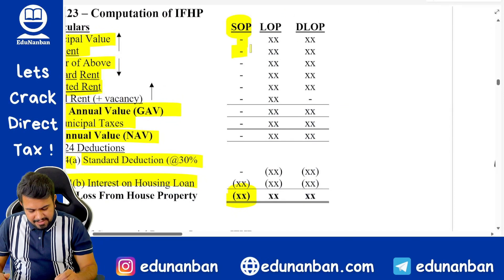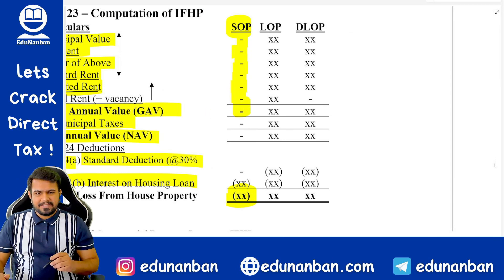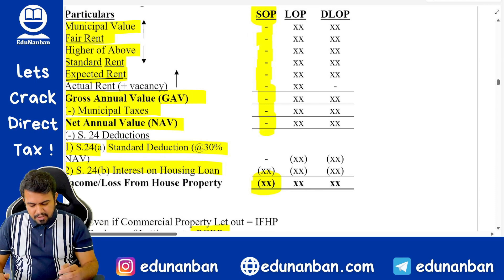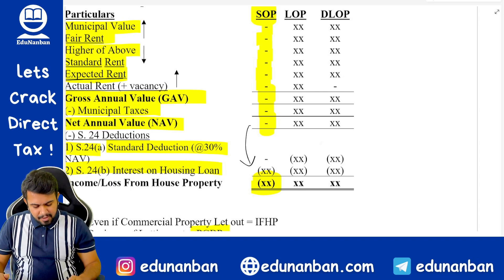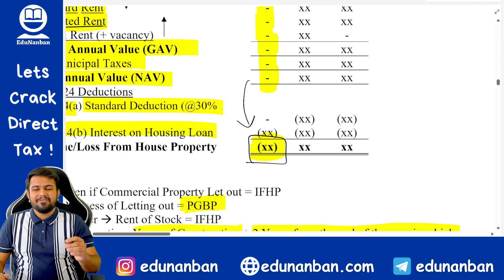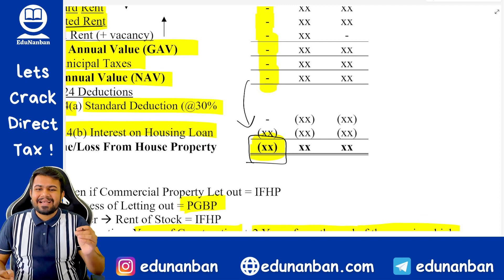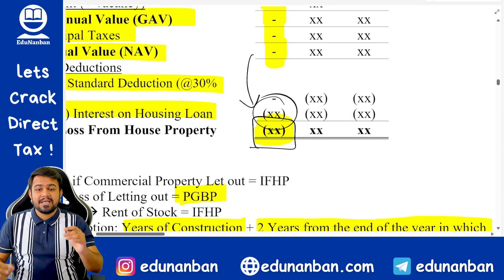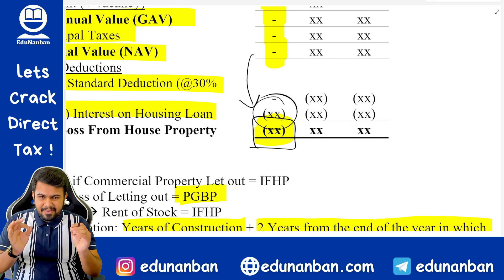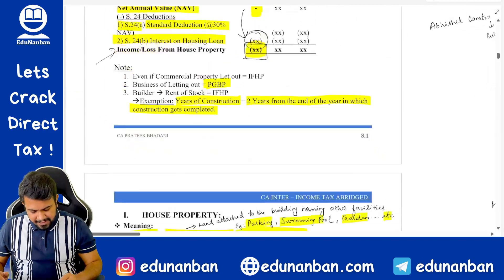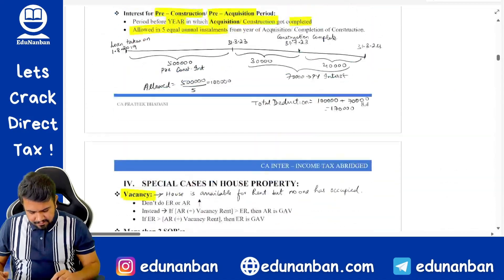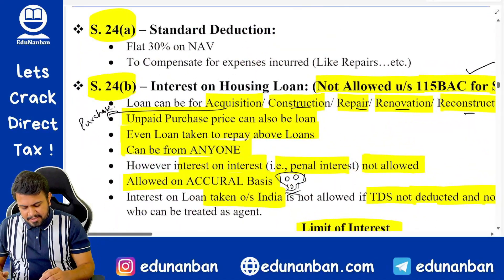If GAV is zero, municipal tax deduction will also be zero. For self-occupied property, since there is no rent, GAV is always zero, so municipal taxes cannot be deducted. Only one deduction is allowed — interest under Section 24B. Hence, income from self-occupied property will either be negative or zero. Moreover, if the assessee chooses the default tax regime under Section 115BAC, interest will not be allowed as deduction, so income from self-occupied property will always be zero.